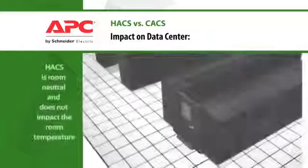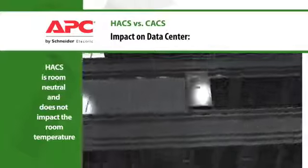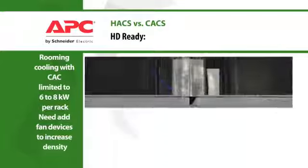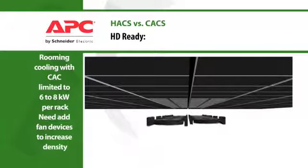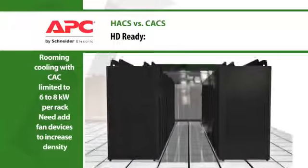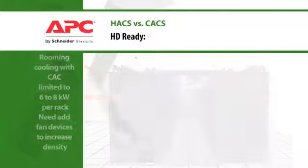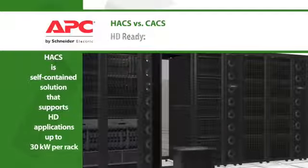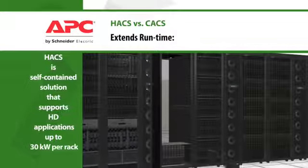The hot aisle containment system can easily be dropped in to any data center without impacting the data center environment. Typical raised floor systems only deliver enough cold air to support a maximum of 6 to 8 kilowatts per rack, and higher densities require specialized design or the addition of fan devices for proper airflow. APC's in-row cooling solution in the hot aisle containment system supports densities of 30 kilowatts per rack and beyond.